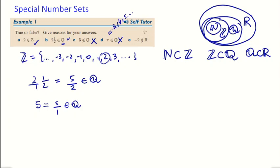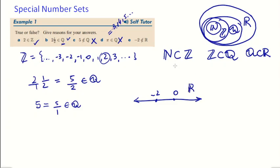Last: negative 2 is not a member of the real numbers. Well, negative 2 is an integer, and all integers are real numbers. Furthermore, you can place negative 2 on the number line, and any number you can place on the number line is a real number. Therefore this statement is false.